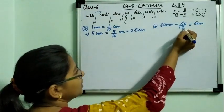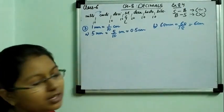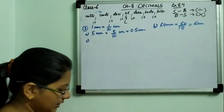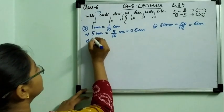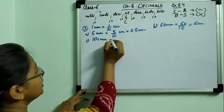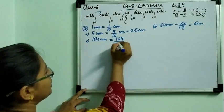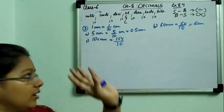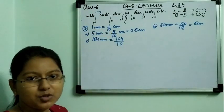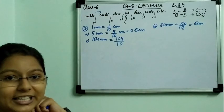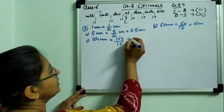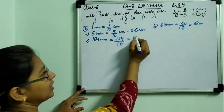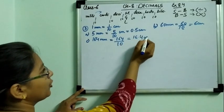Very simple method — there is one zero so decimal after one digit. Now in part C it is 164 millimetre. To convert to centimetre we divide by 10. In exams you must write the formula for each part. There is one zero, so from the right side after one digit: that gives 16.4 centimetre.